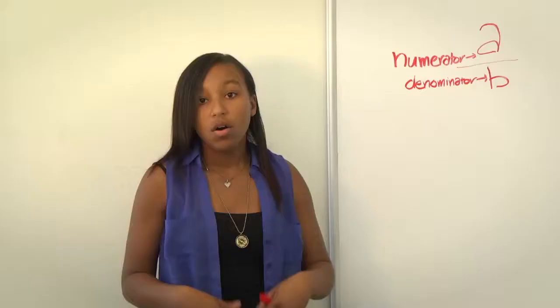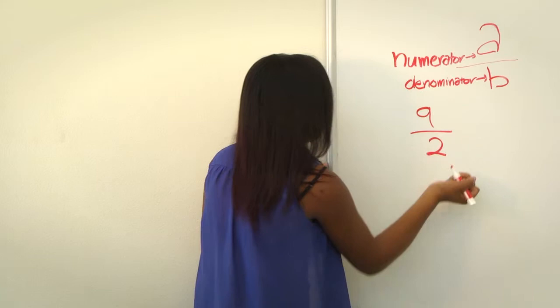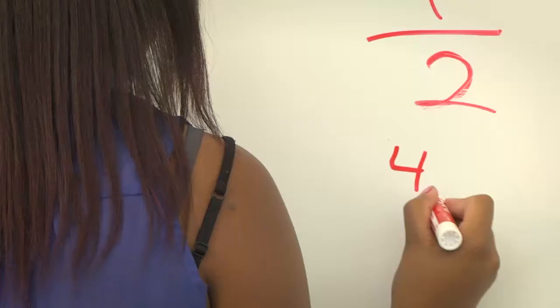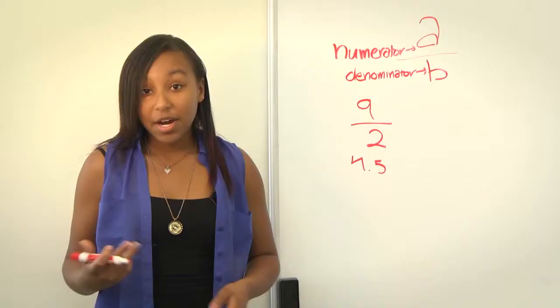Instead of expressing the term as a decimal, you can express it as a fraction. For example, 9 over 2 does not simplify into a whole number, so you can express it as a fraction, as 9 divided by 2, which as a decimal would be written 4.5.